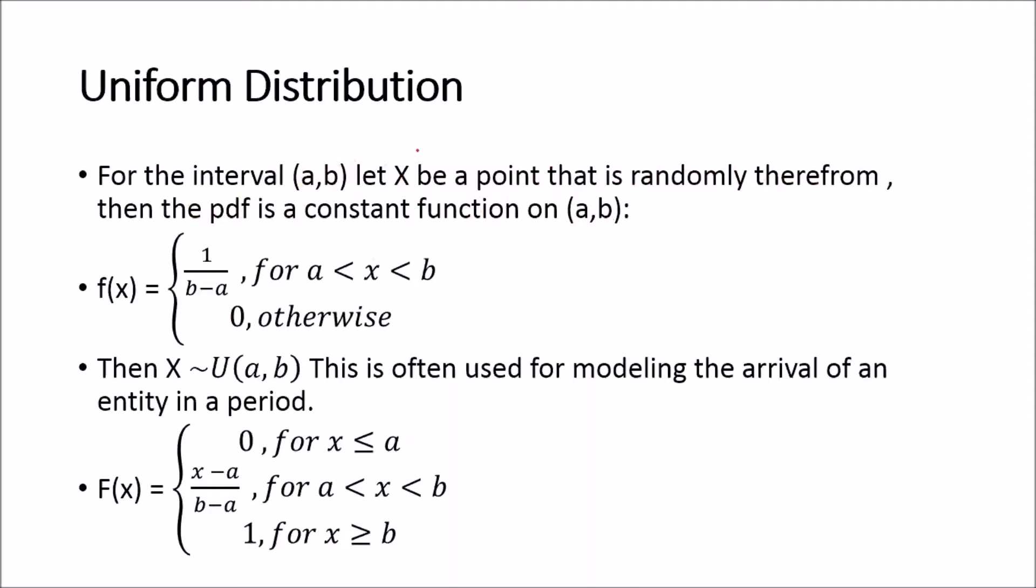That just means that if any point in this interval can be randomly drawn, then that resulting distribution will be a uniform distribution. The probability density function f(x) is a constant, given by 1 over b minus a. The support for such a random variable is a < x < b, and zero otherwise.